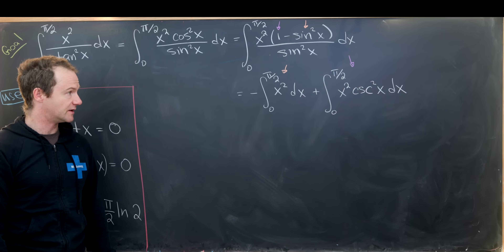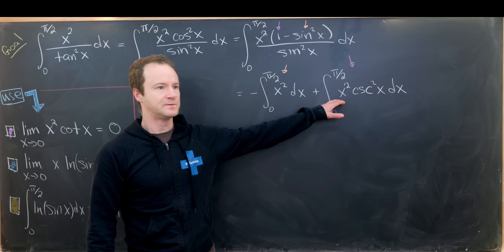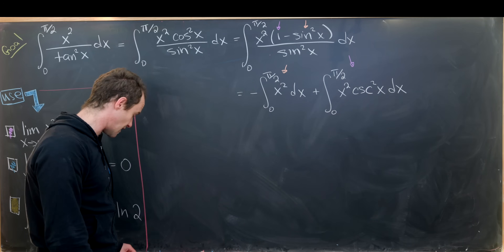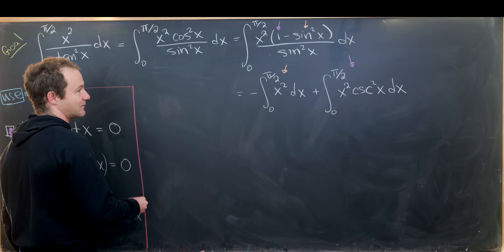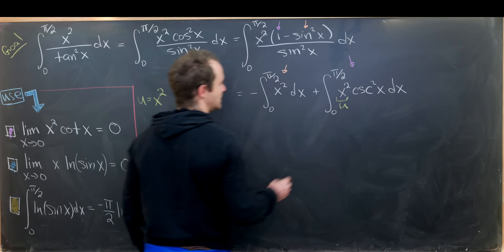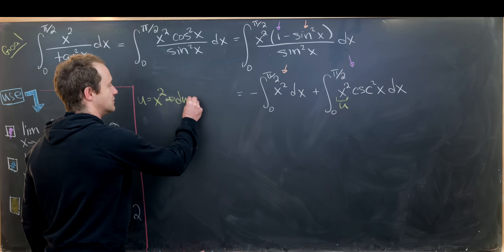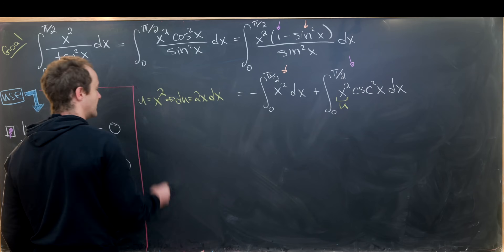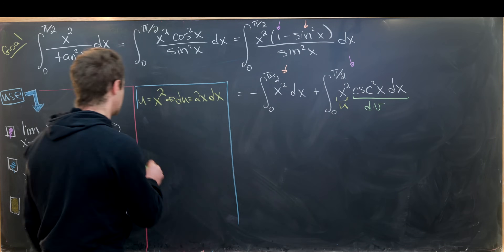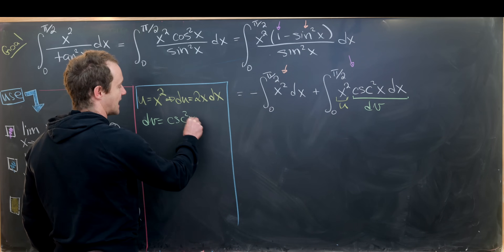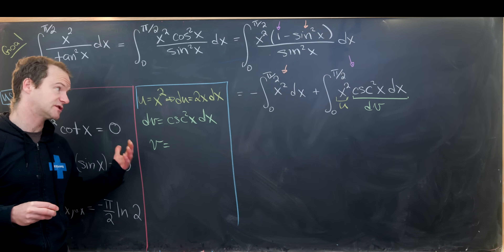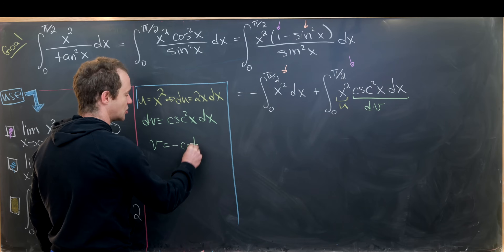For the second integral, we know the antiderivative of csc²(x) — a key Calculus 2 fact — so integration by parts is well-suited. Setting u = x², du = 2x dx, dv = csc²(x) dx, and v = −cot(x).